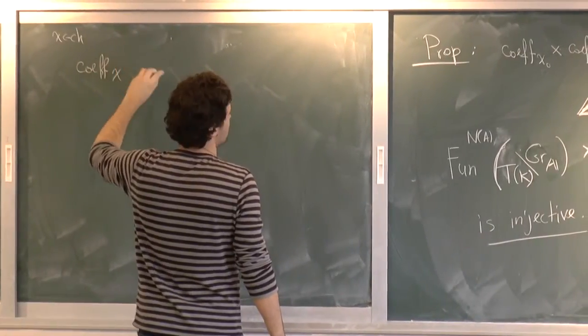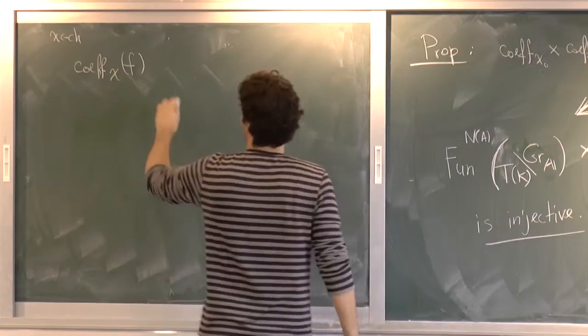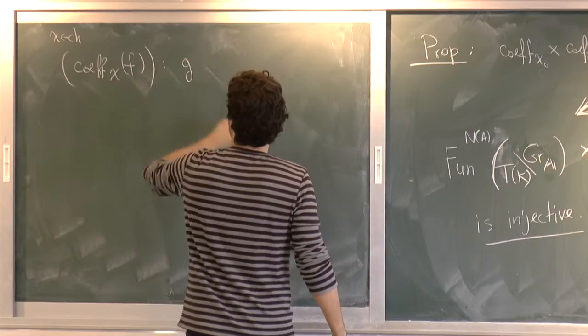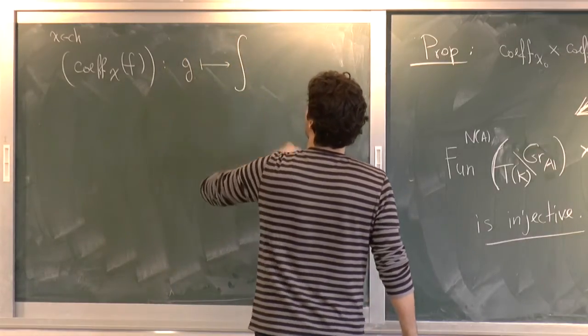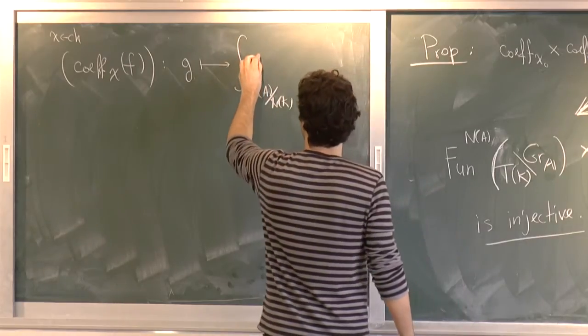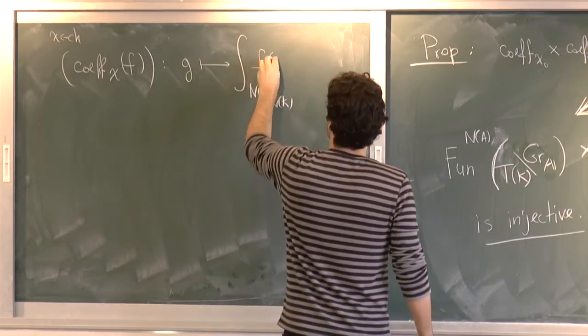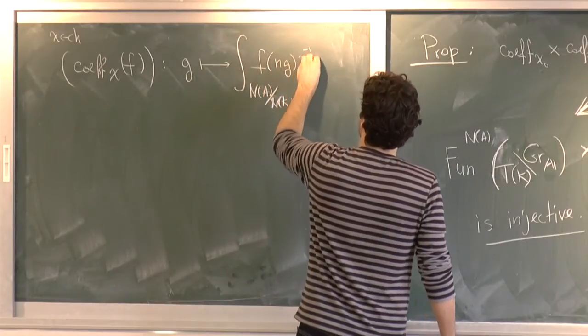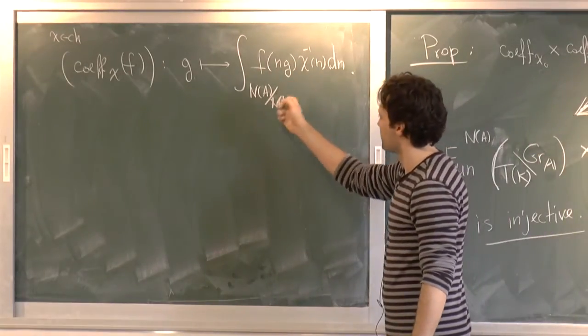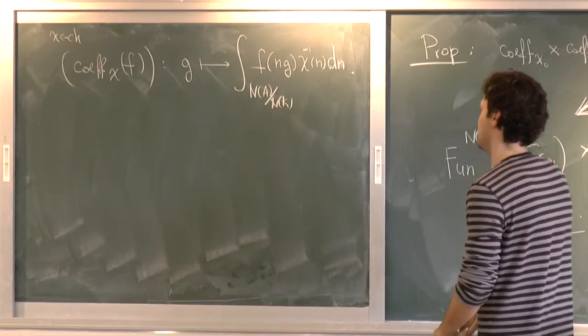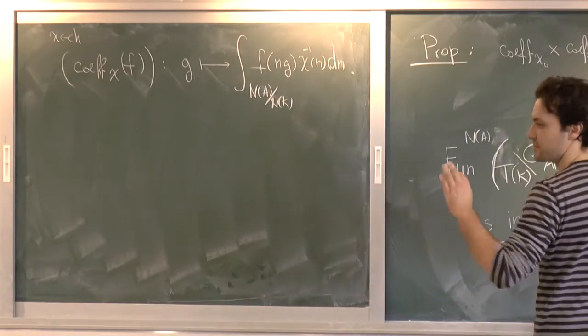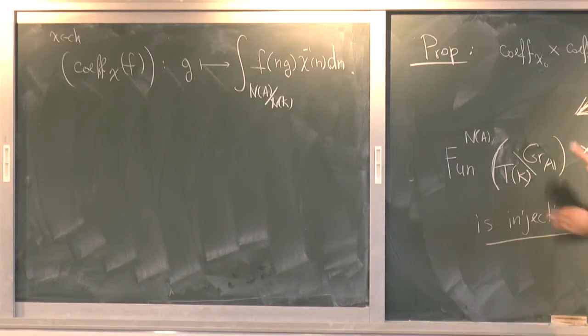That's a general thing. So coefficient with respect to character chi is, so it takes a function on whatever the domain was, and it spits out a function that is described as follows. So it takes an element of G, and it sends it to the integral over N of A mod N of K, which in this case is just A mod K of the function that I had before, times NG inverse character N dN. Note that I can do the integral. I can do the integral, because this guy's compact. OK, so maybe I'll stop here. That's a breakpoint and open for questions.